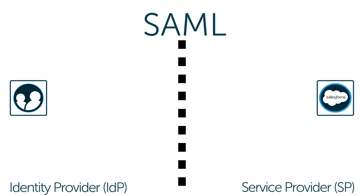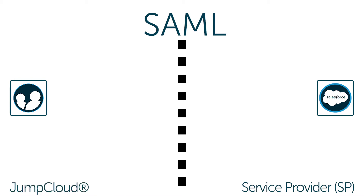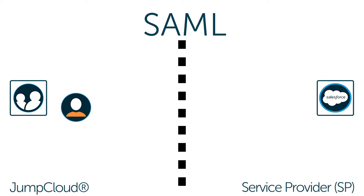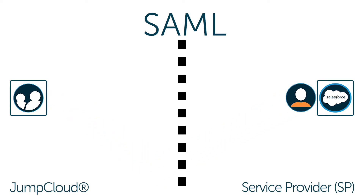In the world of JumpCloud, we are the identity provider. We are the part of the transaction that serves up the authoritative credentials and transmits those credentials through XML — this protocol called SAML — to the service provider.